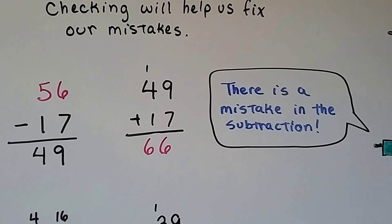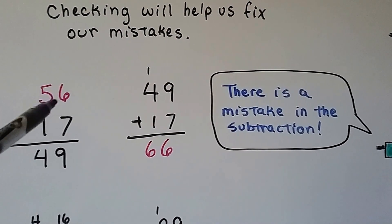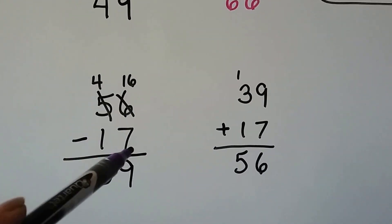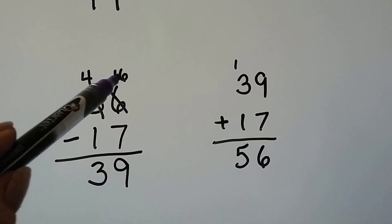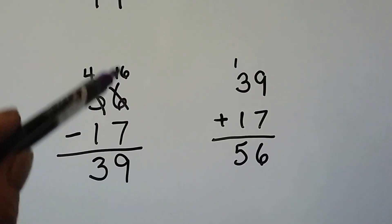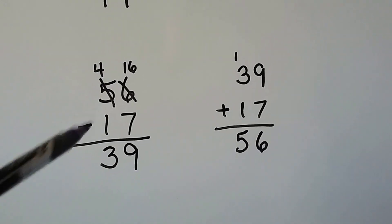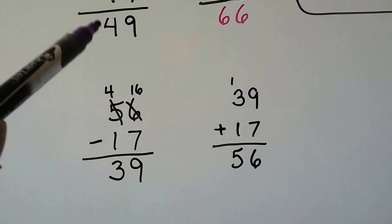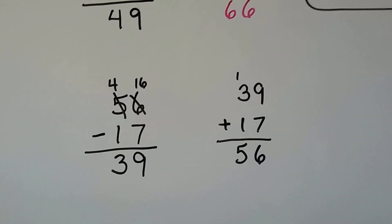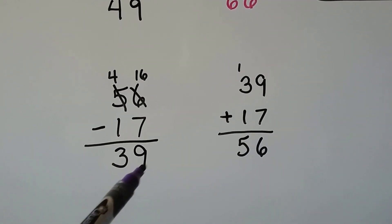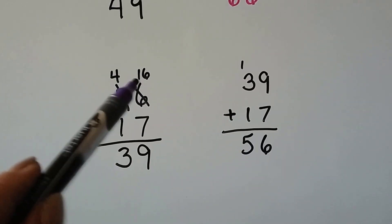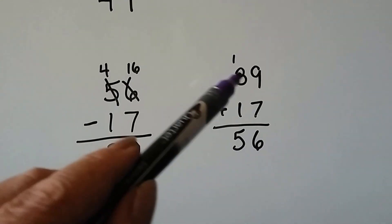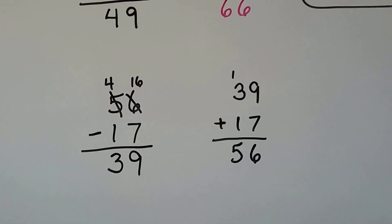Do you see what happened? The 7 is larger than the 6, and we should have regrouped. That 5 should have become a 4, and then we gave a 10 to the ones place, so the 6 became a 16. 16 minus 7 is 9, and 4 minus 1 is 3. So it shouldn't have been 49 — it should have been 39. Now when we add the 39 to the subtrahend, the 17, we do get 56. 9 plus 7 is 16; we regroup the 1 and put the 6 down. 3 plus 1 plus 1 is 5 — 56. It worked.